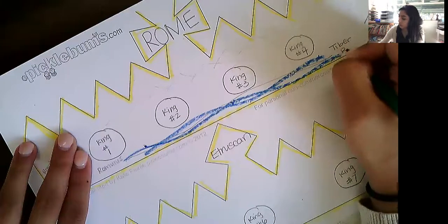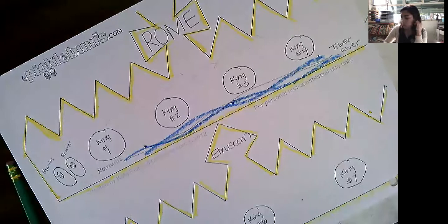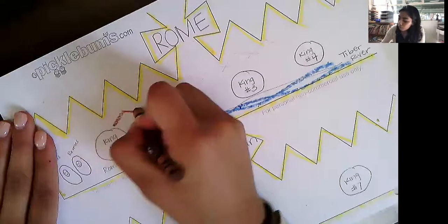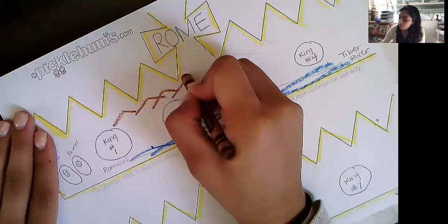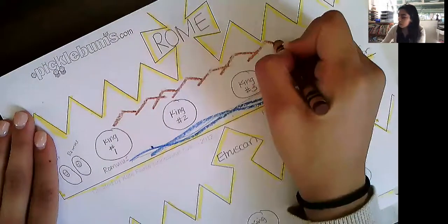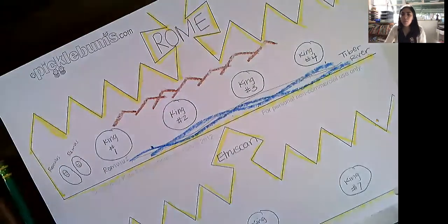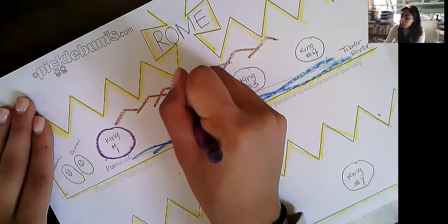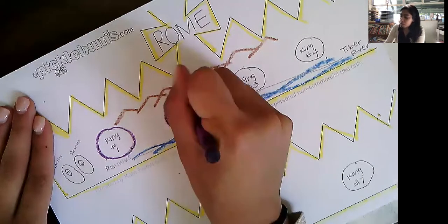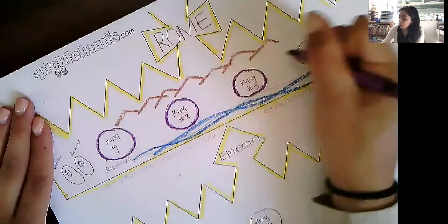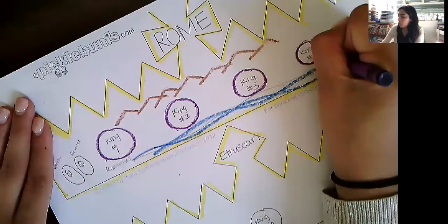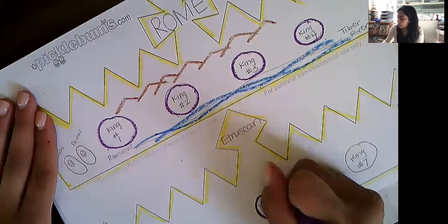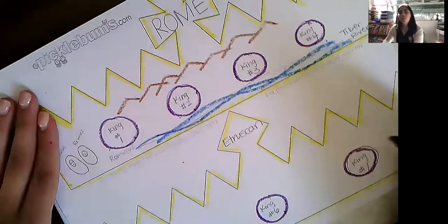Tiber River. I can even draw a wolf and save the kids. I'm going to draw my seven mountains right here. One, two, three, four, five, six, seven. I'm going to make my circles all the same color so that way they know king number one, king number two, king number three, king number four, five, six, and seven.